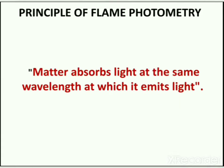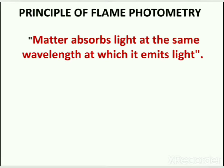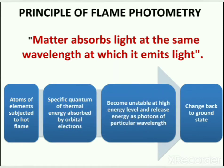The principle of flame photometry is based on the fact that matter absorbs light at the same wavelength at which it emits light. In flame photometry, the substance under investigation is exposed to a hot flame in which thermal energy is absorbed by orbital electrons. Upon absorbing high energy, electrons become unstable and they release energy to obtain a stable state. Energy is emitted in the form of photons, and electrons shift from a higher energy state to a lower energy state.